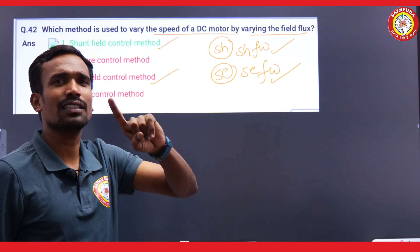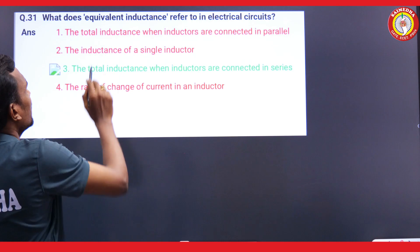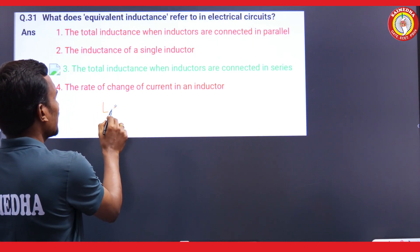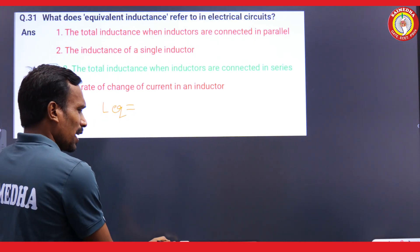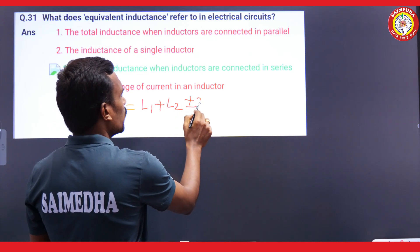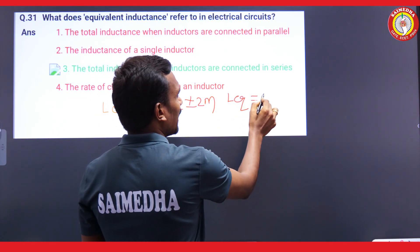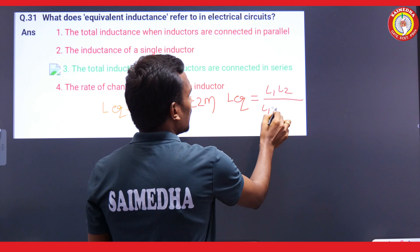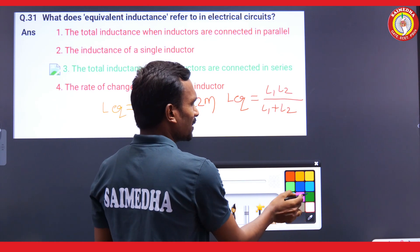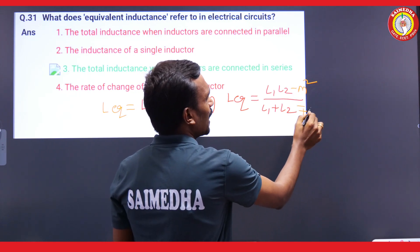This is the first objection in electrician training. Second: what does equivalent inductance refer to? For an electrical circuit, equivalent inductance — what is the question? If the series connection is given, it is L1 plus L2; then L1 plus L2 plus or minus 2M. For parallel connection, it is L1·L2 divided by L1 plus L2. Otherwise, we can also write it as L1·L2 minus M² divided by L1 plus L2 minus 2M.